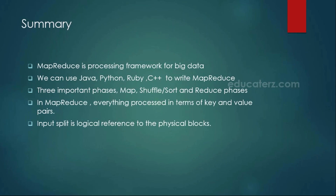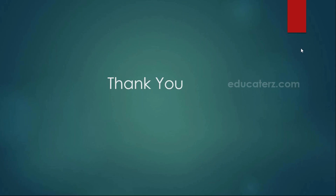In summary, in this module we discussed what MapReduce is, how it evolved, and the programming languages you can use — Java, Python, C++, and Ruby. We understood the three phases: Map phase, Shuffle and Sort phase, and Reducer phase. We also saw that everything is in terms of key and value pairs, and that the input split is a logical representation of your actual block existing as part of MapReduce. In the next module we are going to see the architecture of MapReduce. Thank you, let's catch up in the next module.